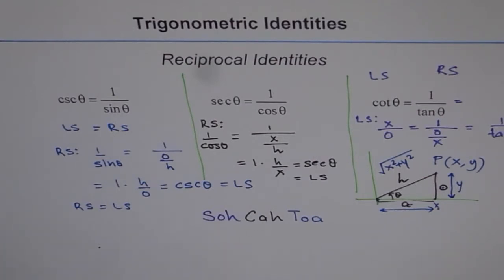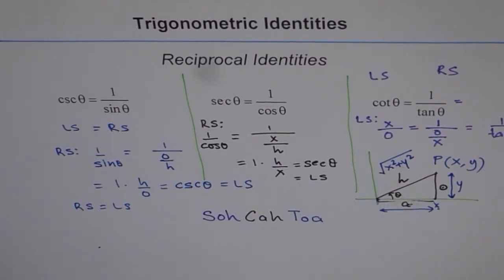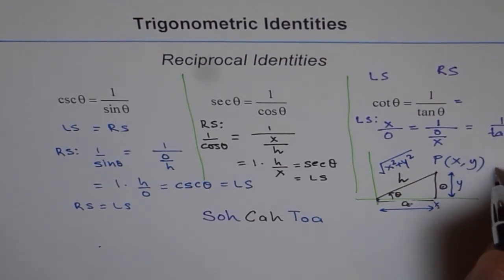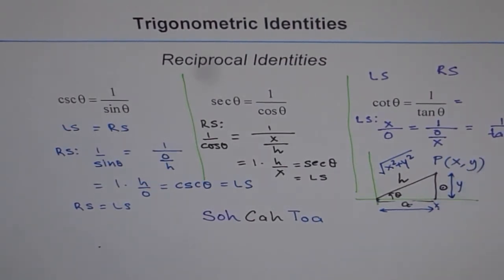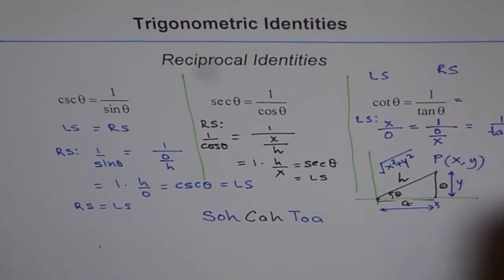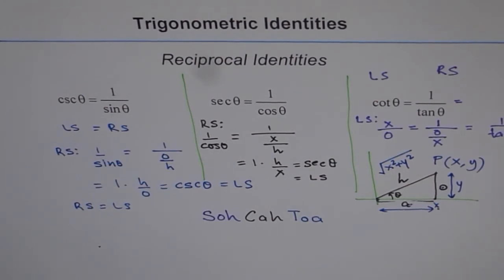I mixed approaches to show you how to see the same thing from different angles. For example, if point P is (2, 3), then cos theta equals 2 divided by the square root of 2² + 3², which equals 2 over the square root of 13. Using h as the square root of x² + y² is helpful when a coordinate point is given.